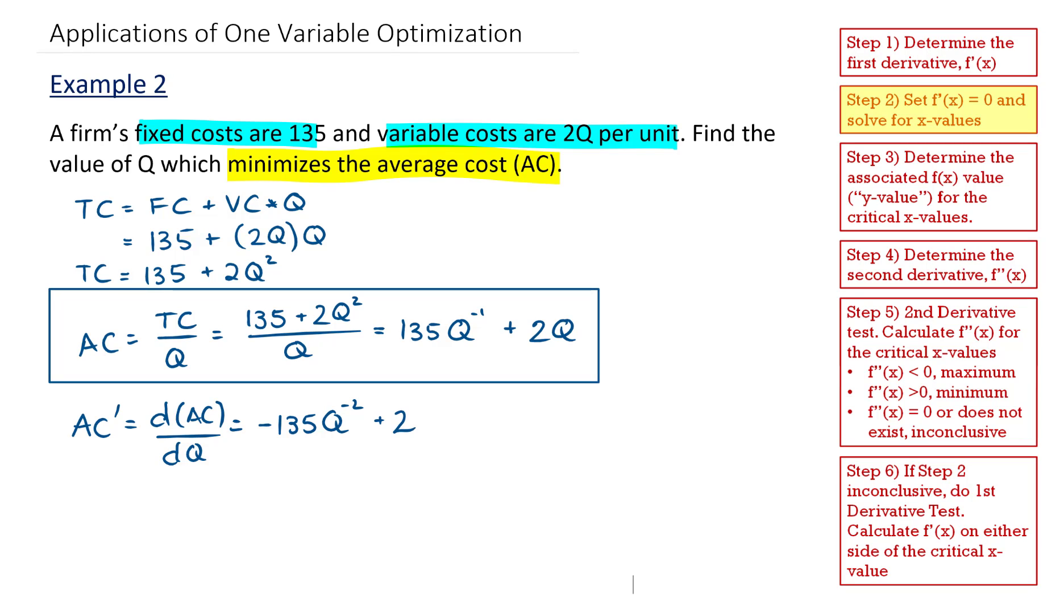Now that I've determined the first derivative, I set it to be equal to 0. And I solve for what Q would be. I'm going to move 135Q to the power of negative 2 to the other side of the equation. I get 2 is equal to 135Q to the power of negative 2. This can also be written as 135 over Q squared.